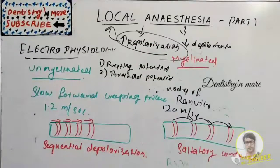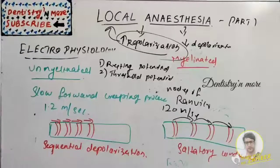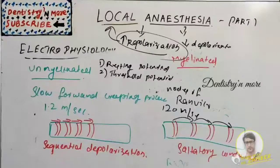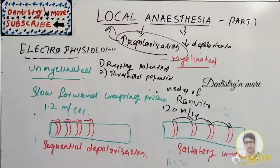To summarize part one: we discussed action potential, membrane potential, sequential depolarization, saltatory conduction, and the local anesthesia mechanism — changing resting potential, threshold potential, increasing repolarization, and decreasing depolarization. The next session will cover the various theories of local anesthesia, including the acetylcholine theory, calcium displacement theory, surface charge theory, membrane expansion theory, and specific receptor theory. Thank you.